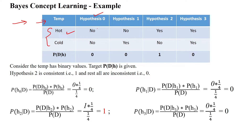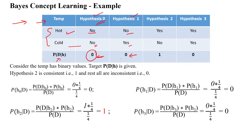The zeroth hypothesis has for hot: 0, for cold: no, and the probability of data given hypothesis H0 is 0. Hypothesis 1 has for hot: no, cold: yes. The probability of D given H1 is also 0, meaning inconsistent.